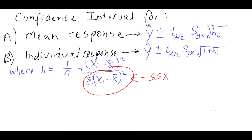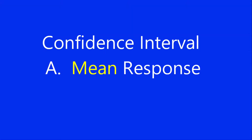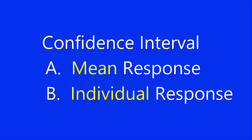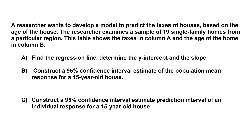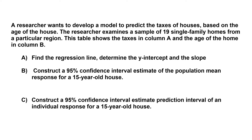Now that we have the two formulas, we are ready to solve our problem. A researcher wants to develop a model to predict the taxes of houses based on the age of the house, examining a sample of 19 single-family homes. Part A: find the regression line — determine the y-intercept and slope. Part B: construct a 95% confidence interval of the population mean response for a 15-year-old house. Part C: construct a 95% confidence interval of an individual response for a 15-year-old house.